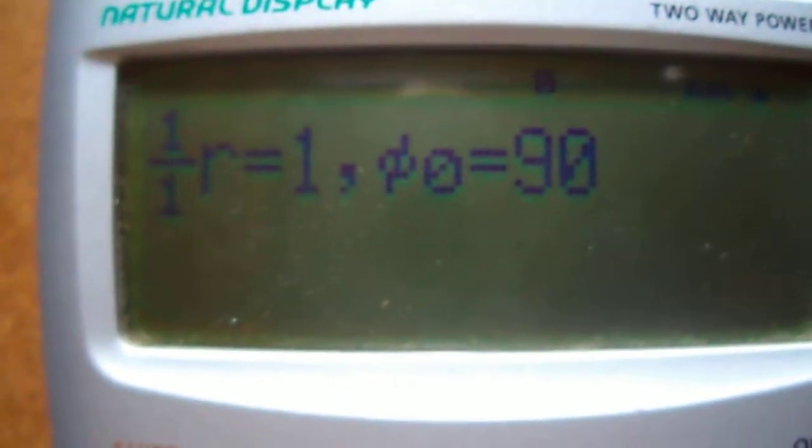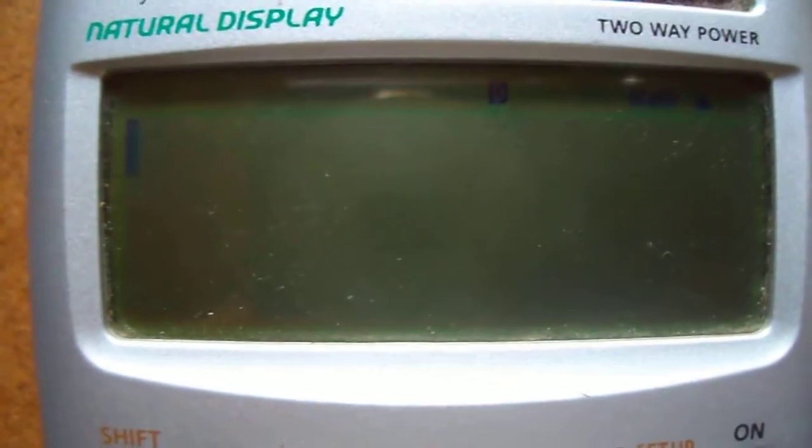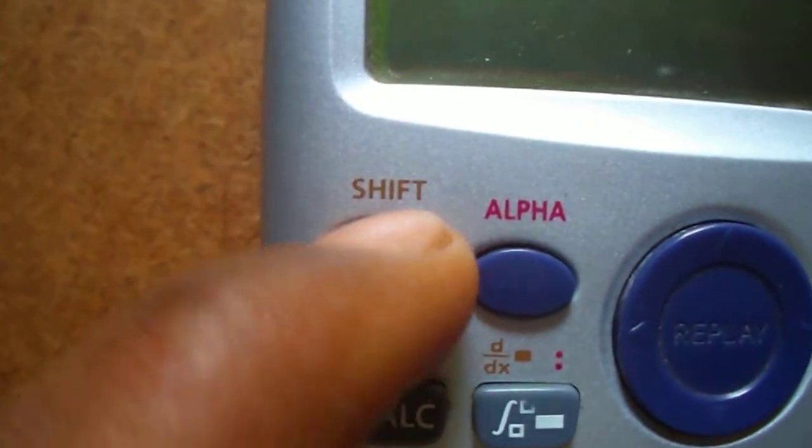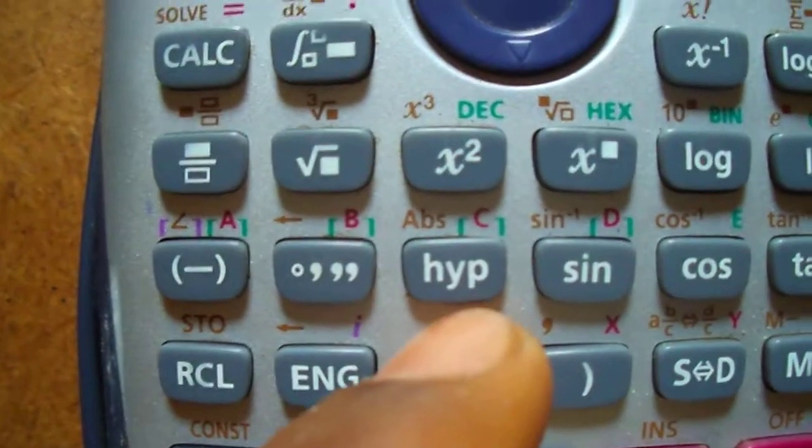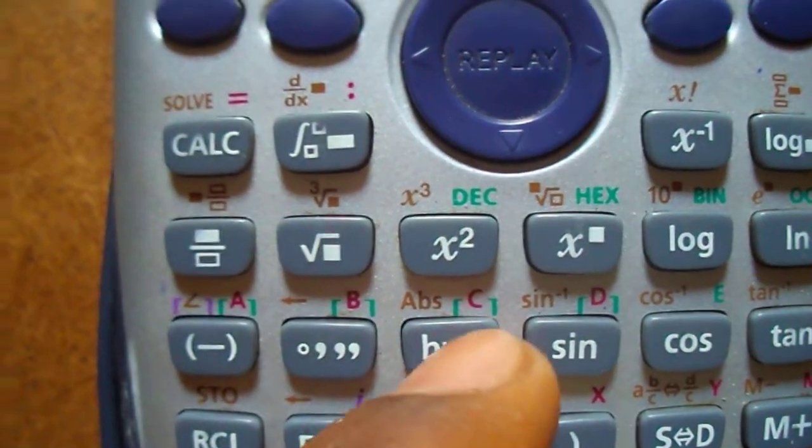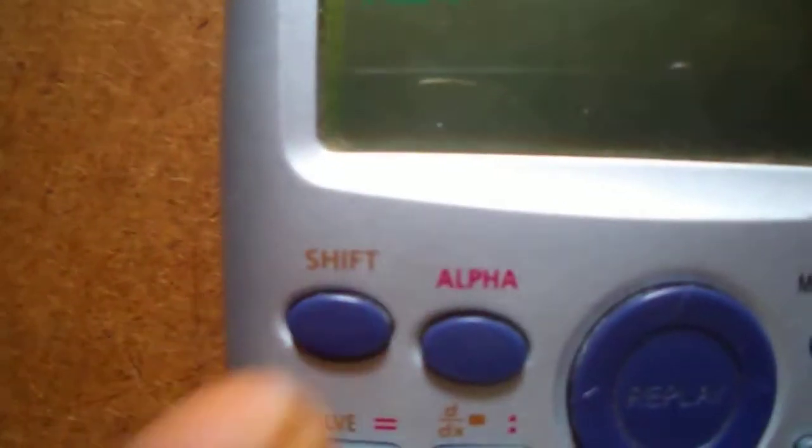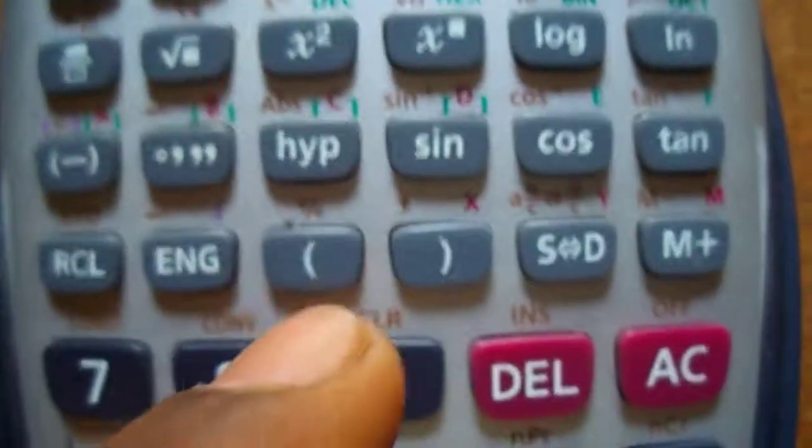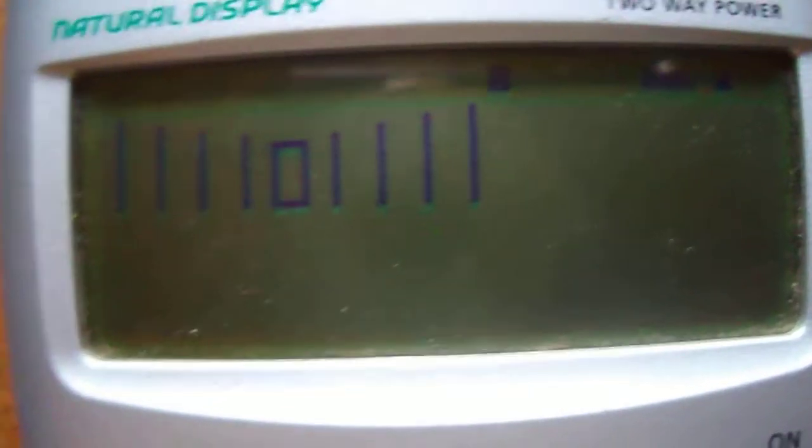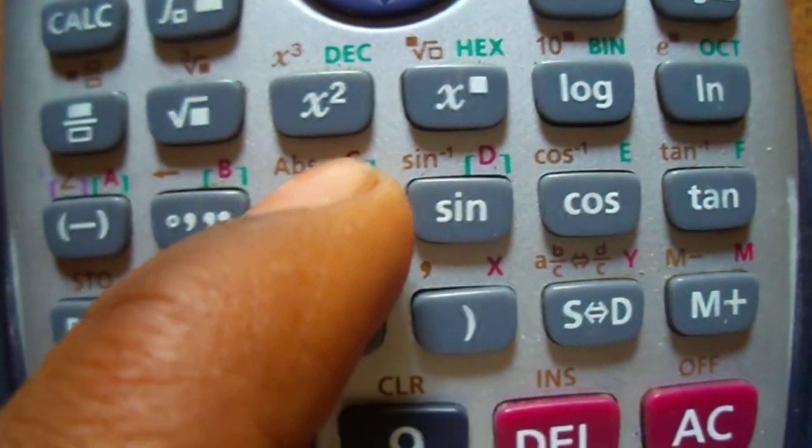Now press AC. Now press the absolute button. For pressing absolute button first press shift then press this hyper once. Do this again for four times. Shift... third time... fourth time... fifth time. Now press the square root button.